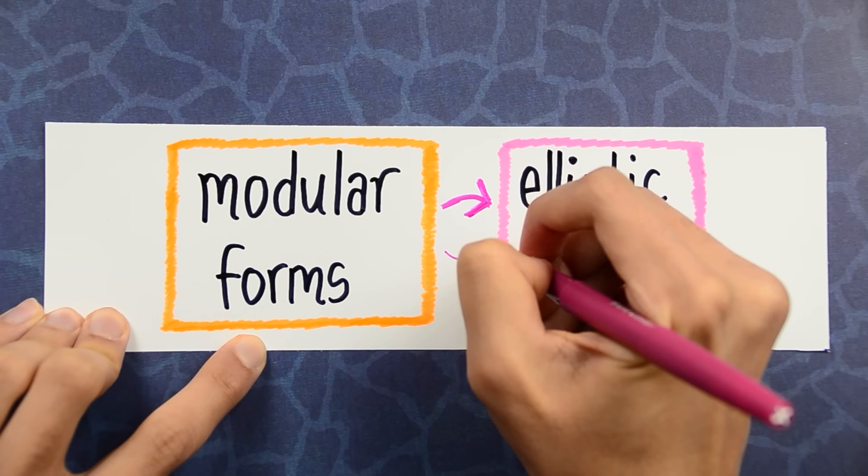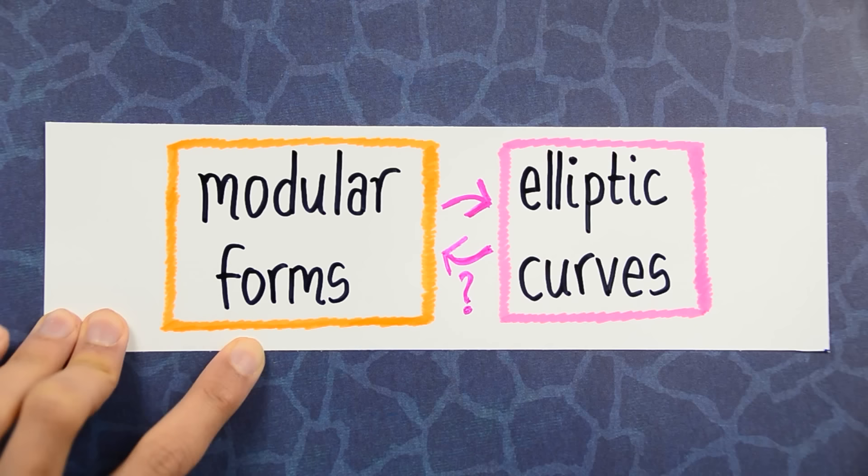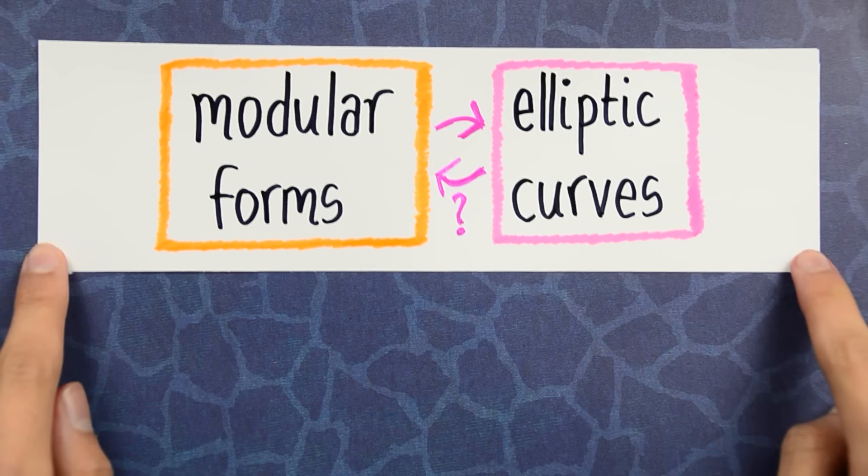But it wasn't until many years later that people dared to suggest that you might be able to go back. That maybe, every elliptic curve came from a modular form.